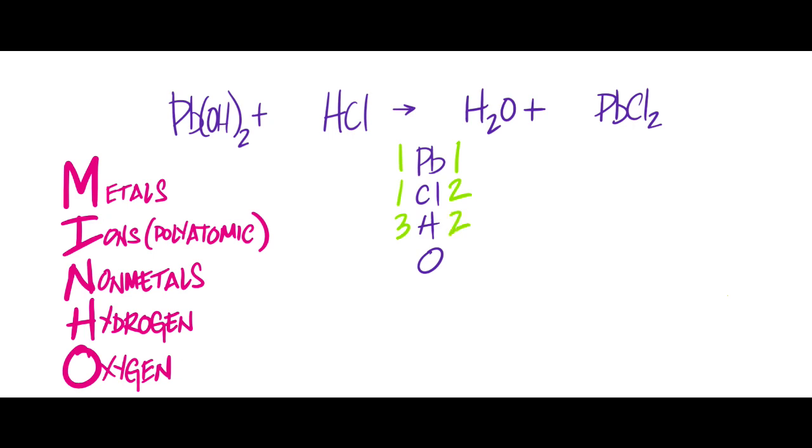Last up is oxygen. Now again, there's two oxygens on the reactant side because the hydroxide is multiplied by two because of the subscript. And I only see one oxygen as a product. So now we see where our main issues lie. And it turns out that our metal, the first thing we would be balancing, is already balanced.